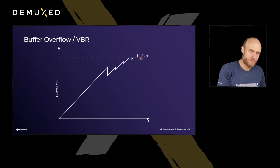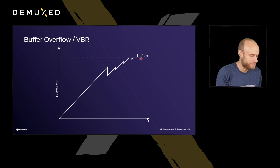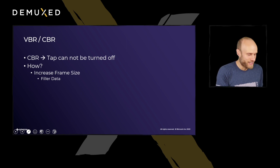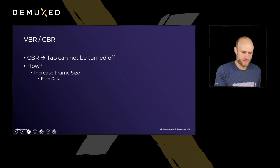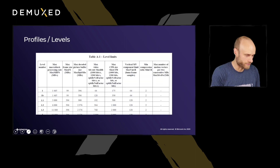This is also called VBR mode — variable bitrate mode — and this is part of the HRD as well. There's another mode the HRD can be operated in, which is CBR mode, constant bitrate mode. In CBR mode, the tap cannot be turned off — it must never be turned off. So the flow into the buffer is always constant. How do you achieve this? Either the encoder increases the quality or bitrate of the frames, or if the sequence is pretty easy to encode, you add filler data. Most encoders just add filler data in order to not make the buffer overflow. That's the difference between VBR and CBR.